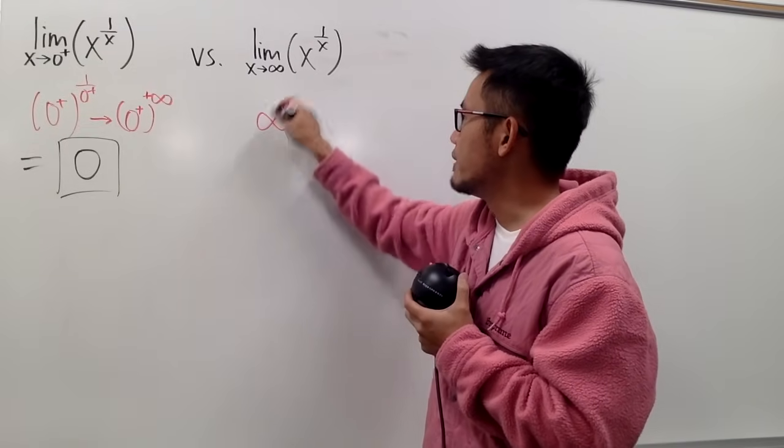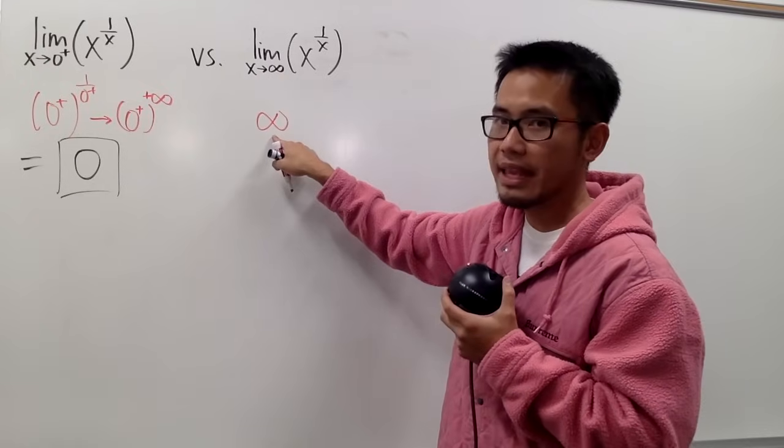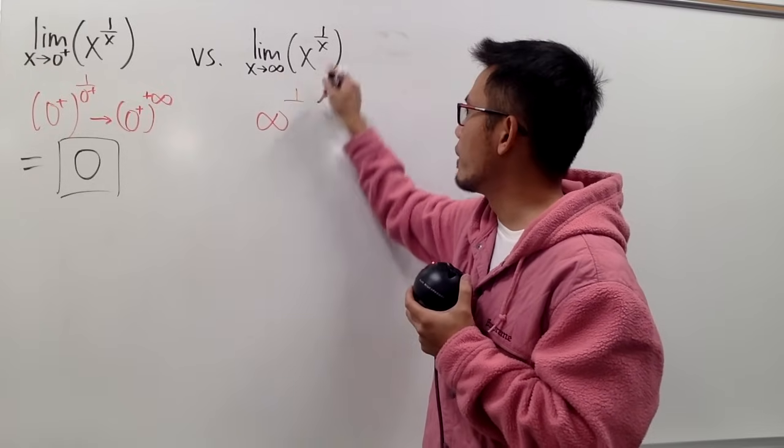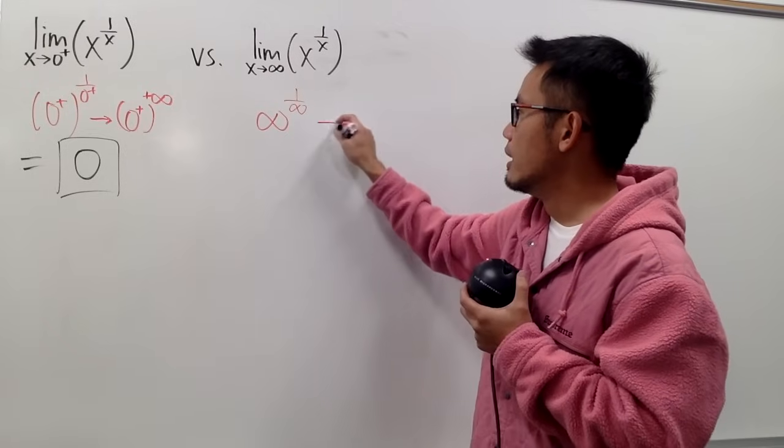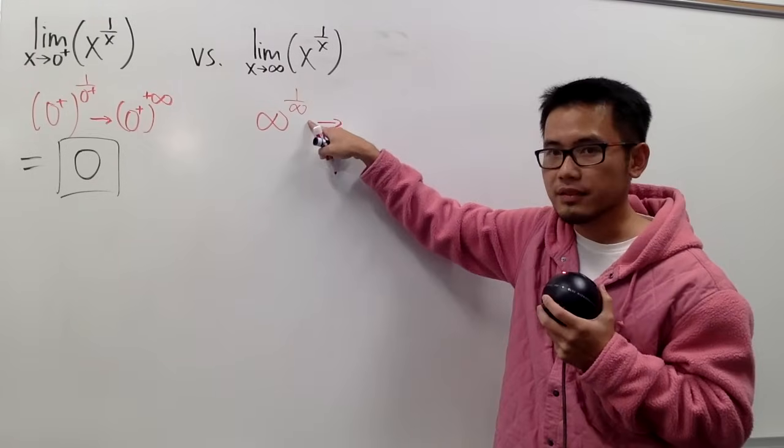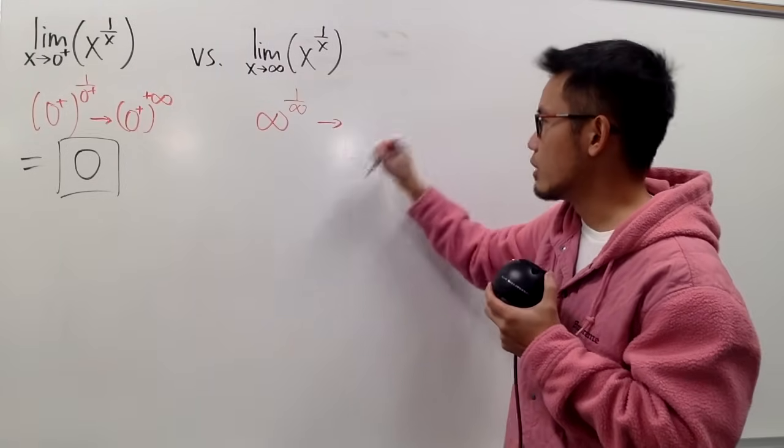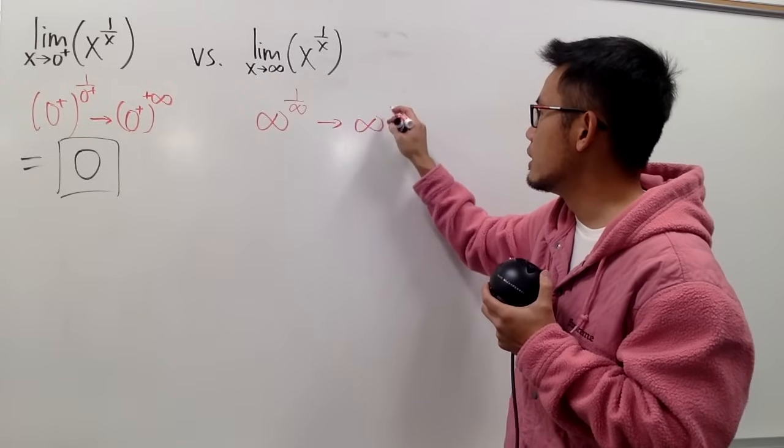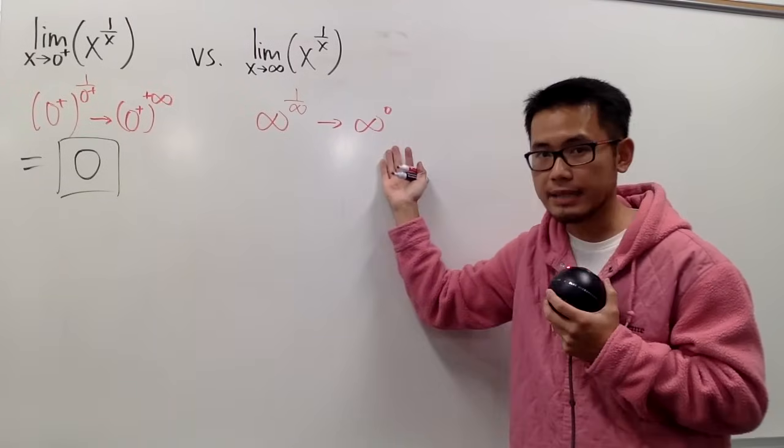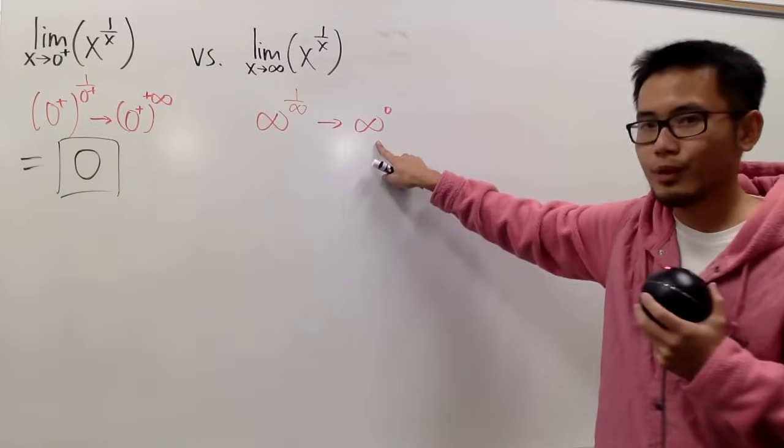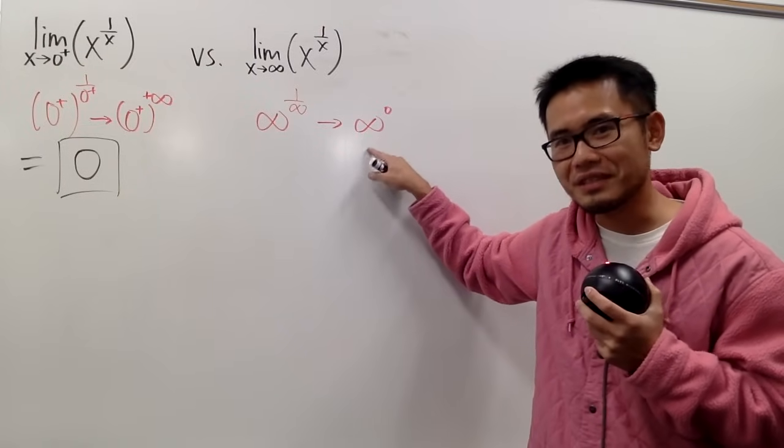We have infinity for the base, and then I will have 1 over infinity like this. And when we have 1 over positive infinity like this, this right here is 0, so we will have infinity raised to the 0's power like that. Okay,